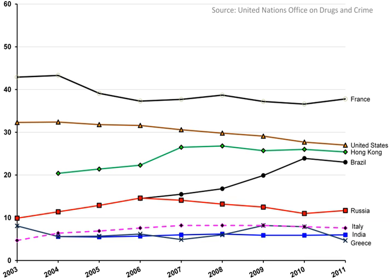Even after the 2013 reform, marital rape when the wife and husband lived together continued not to be a crime in India. Article 376B of the 2013 law made forced sexual intercourse by a man with his wife, if she is living separately, a crime punishable with at least a two-year prison term. Forced sex by a man on his wife may also be considered prosecutable domestic violence under Section 498 of the Indian Penal Code as well as the Protection of Women from Domestic Violence Act 2005. The crime of sexual assault on a child — anyone below the age of 18 — is further outlined in the Protection of Children from Sexual Offenses Act 2012.